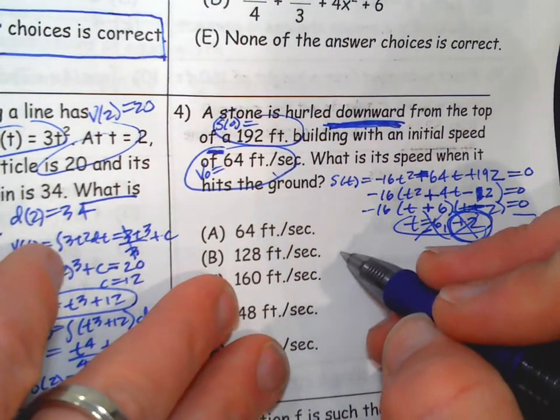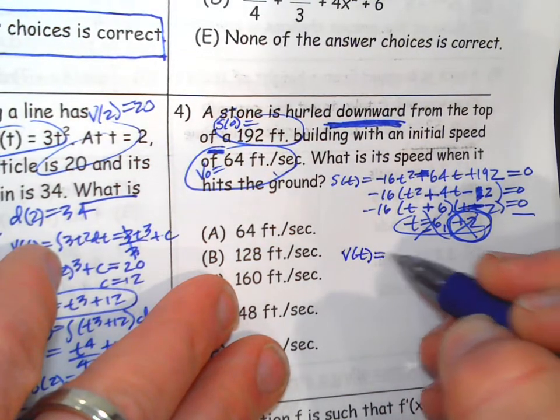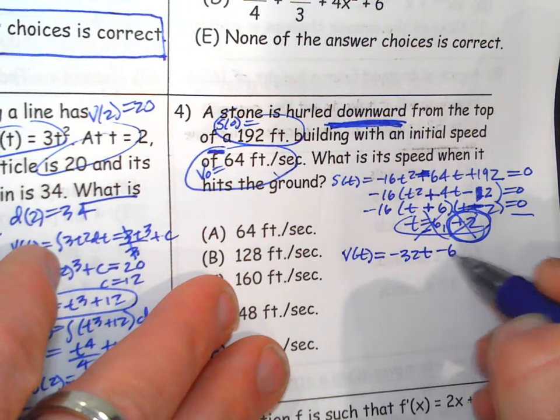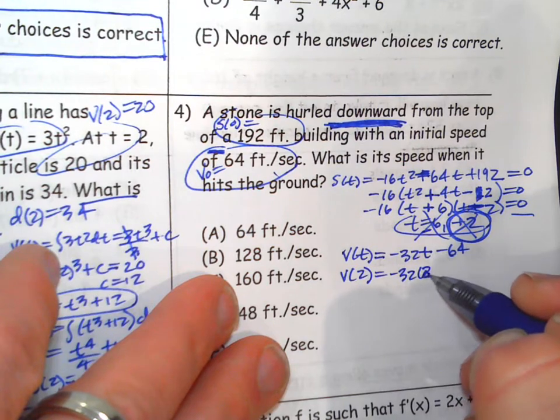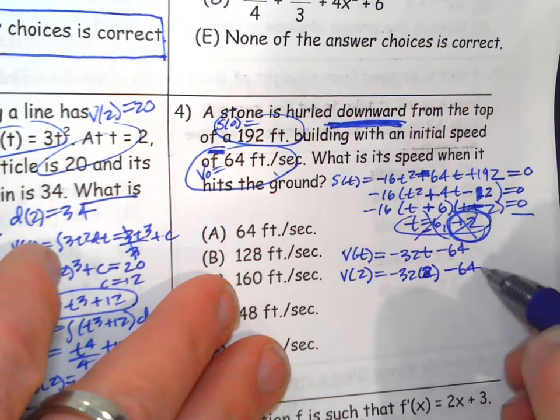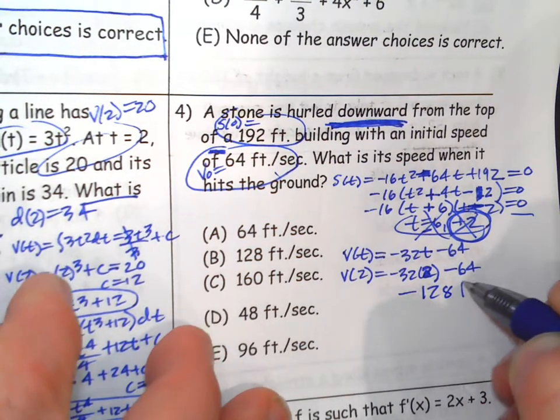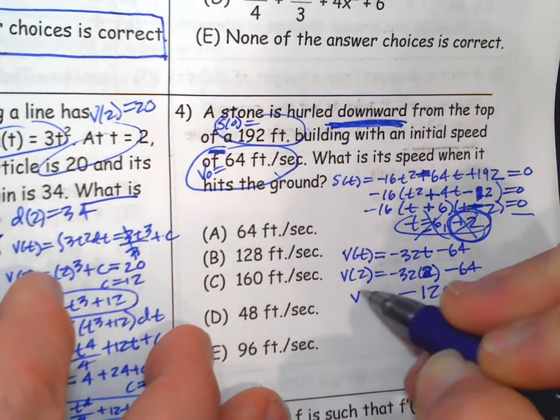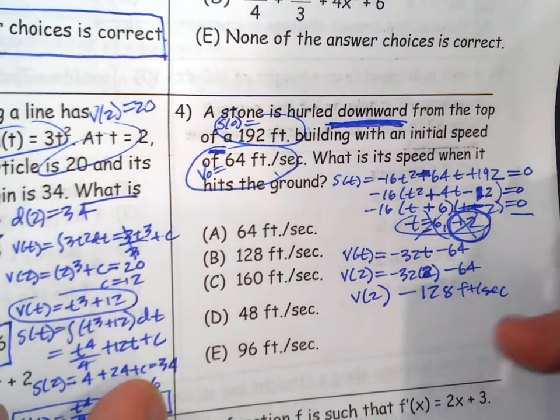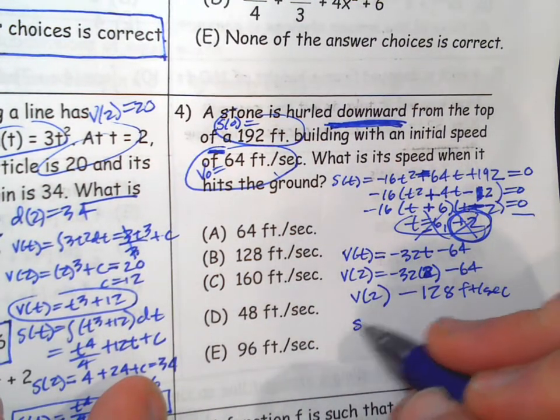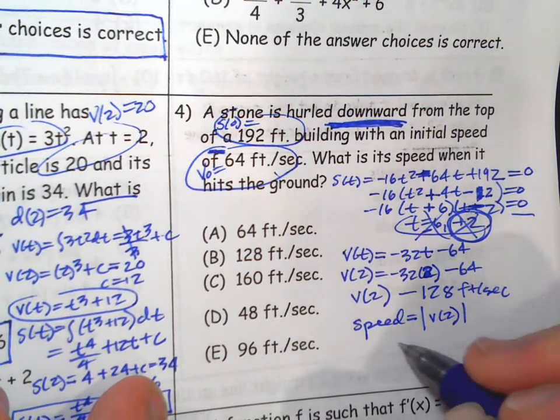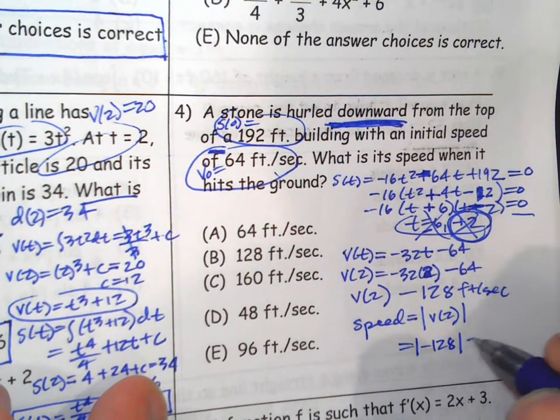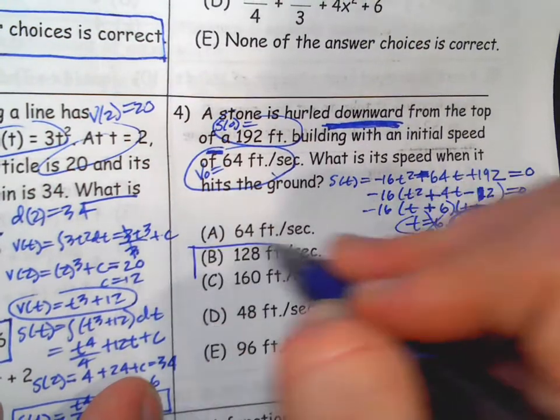So now we need the, it says speed. So velocity would be the derivative of position, negative 32t minus 64. We're going to plug 2 into that. And we're going to get negative 128 feet per second for the velocity when it hits the ground. Now, it says speed. So speed would be the absolute value of velocity. It doesn't care about direction. Okay, alright, number 5.